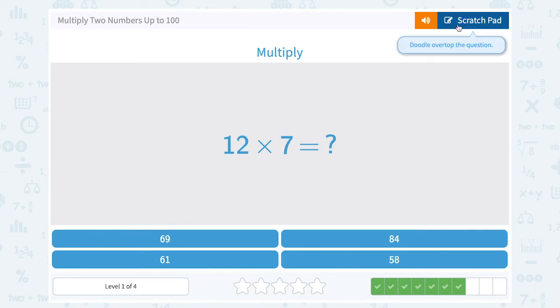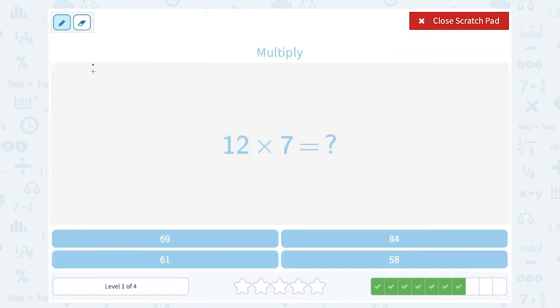Twelve times seven. If you're not sure off the top of your head, write it out this way. Twelve times seven. Seven has to get multiplied by both of these digits. So seven times two is 14. I'm going to put the four, carry the one. Seven times one is seven, plus the extra one makes it eight. So my answer would be 84.